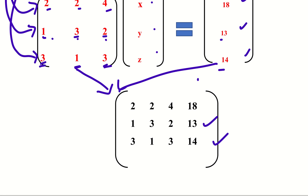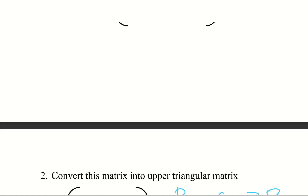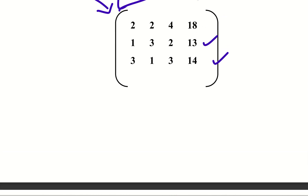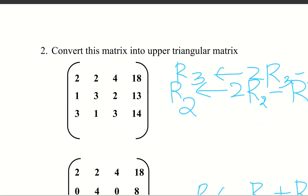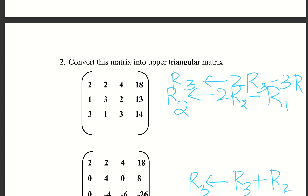The next step is to convert this augmented matrix to an upper triangular matrix by making certain elements zero using row transformations. We need to make the elements below the leading diagonal equal to zero.